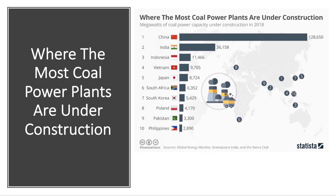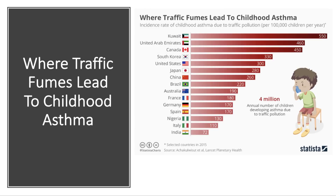On coal plants under construction, China leads the way and is already the biggest emitter of CO2 in the world. In the United States, as far as I know, there are no active new coal power plants under construction at the moment. But China and India are well ahead of the rest of the world — huge issues.